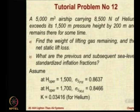So to make life easy for you, I have given you the numerical values of the sigma at 1500 meters and sigma at 1700 meters. Notice that sigma is 0.8637 and 0.8466 respectively. And for helium the value of K is 0.03416. So let us see if you can solve this question.